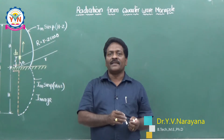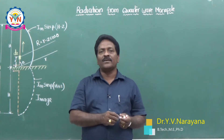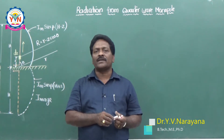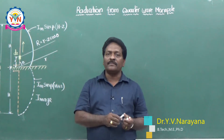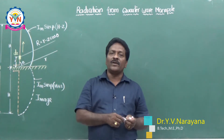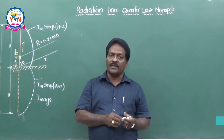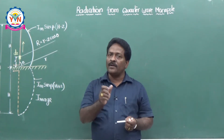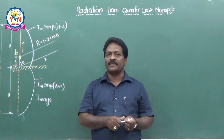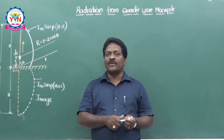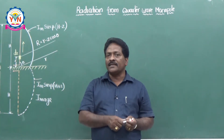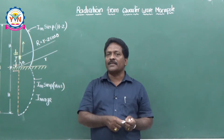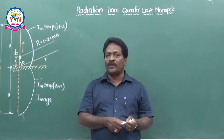Dear students, in this class we are going to see the radiation from a quarter wave monopole, along with the power radiated by this quarter wave monopole and its radiation resistance. We are going to prove that the radiation resistance of a quarter wave monopole is 36.5 ohms.